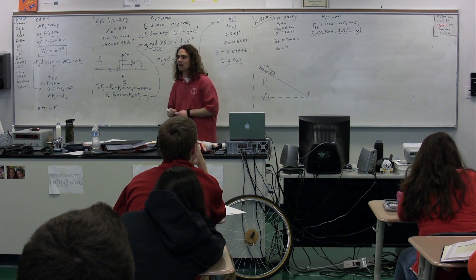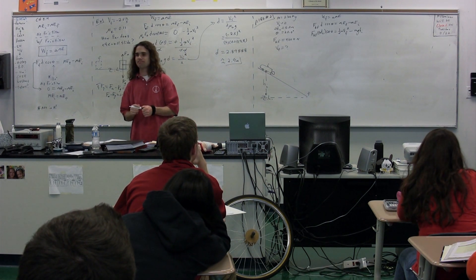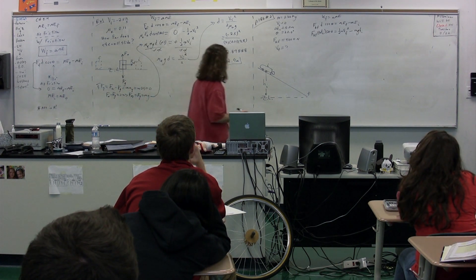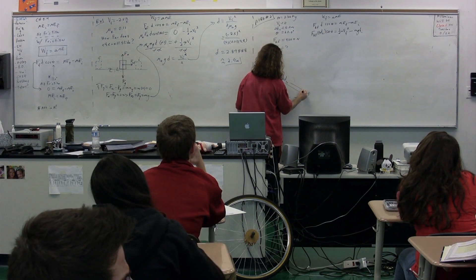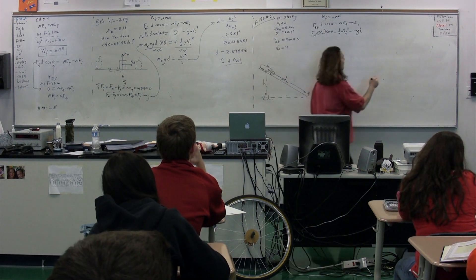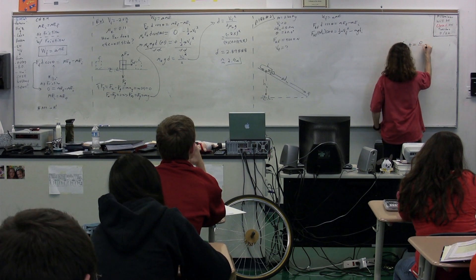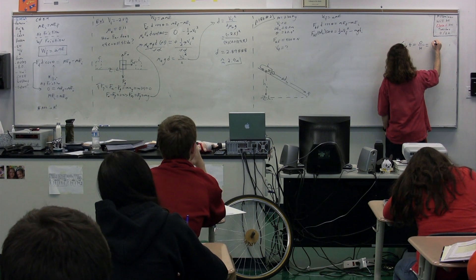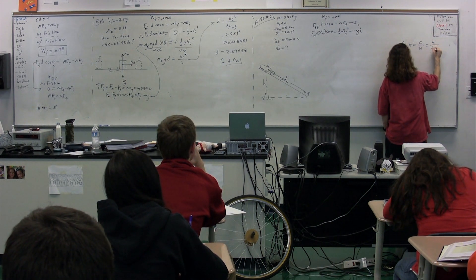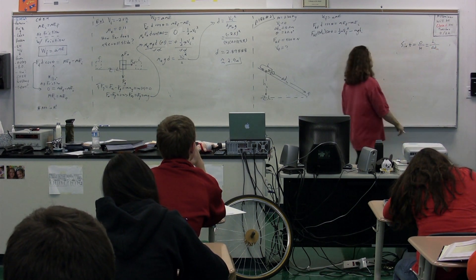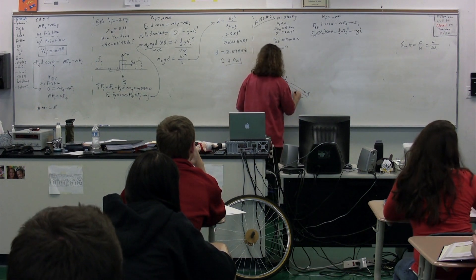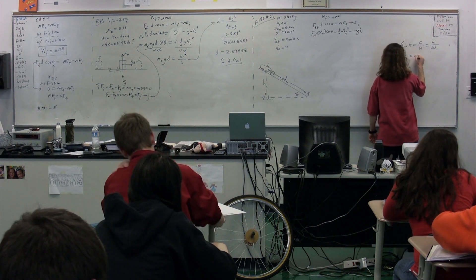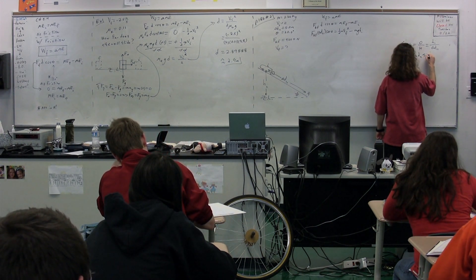How are we going to find the height initial? Nick? You can do the sine of theta equals the height initial over the delta-D parallel. Opposite of our theta, we have height initial. On the hypotenuse, we have delta-D parallel. Therefore, the height initial equals the displacement in the parallel direction times the sine of theta.